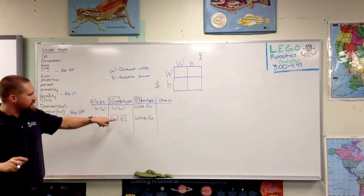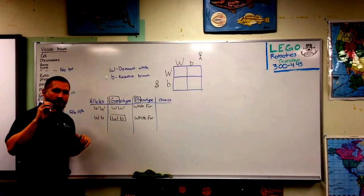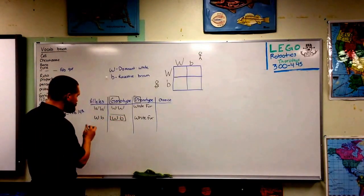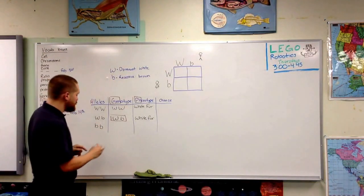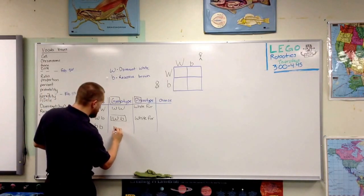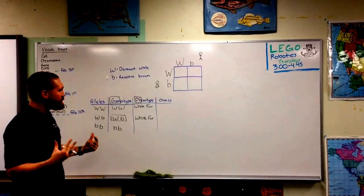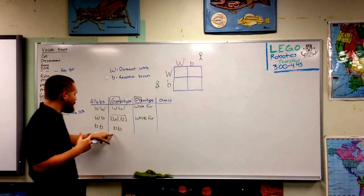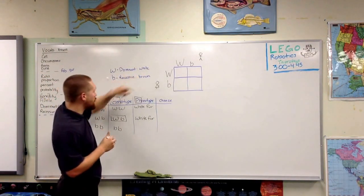Just always remember: anytime there's a capital letter — a dominant allele — the body is going to listen to that allele and not worry about the recessive one. If we have our third possible combination, which is recessive, recessive, our genotype is recessive, recessive. Our phenotype — what is the physical characteristic, what would I see if I took a photo — because we have two recessive alleles, I would see brown fur.